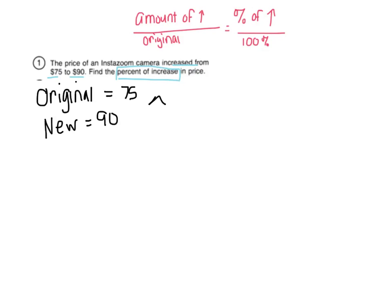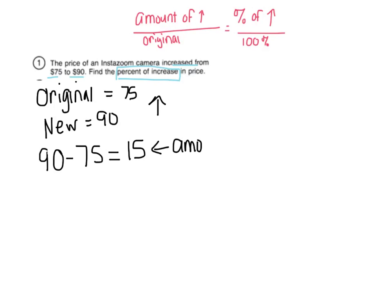I'm going to note this is going to be a percent of increase when I'm all done. The amount that it increased — I take my new amount minus my original — and that's going to tell me how much it went up by. So it went up $15. This is the amount of my increase, and we're going to use that in our proportion.